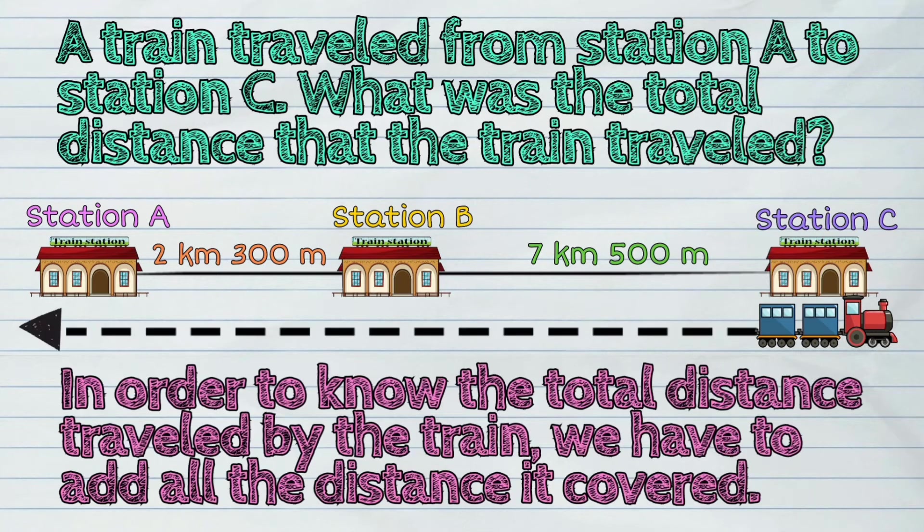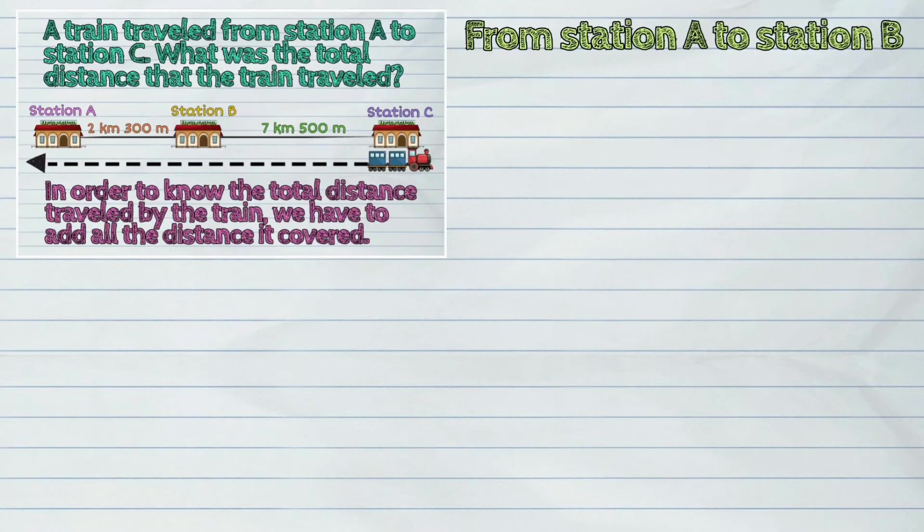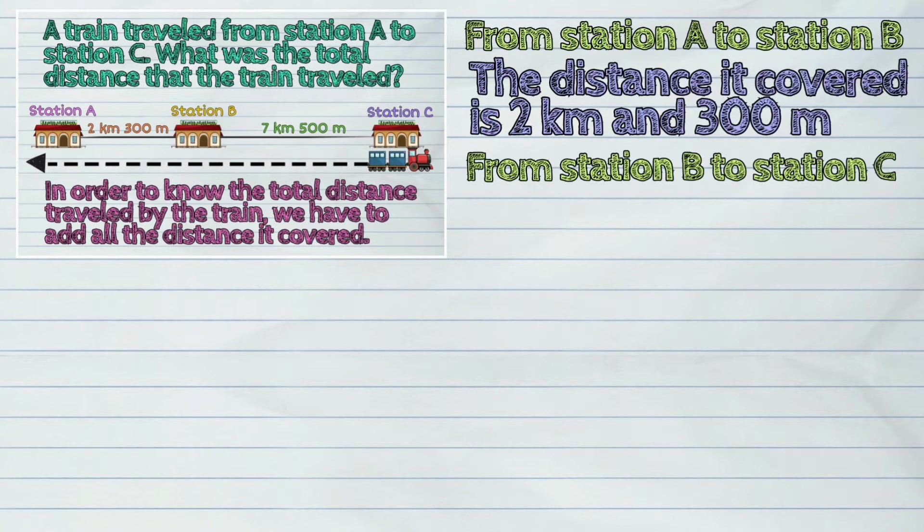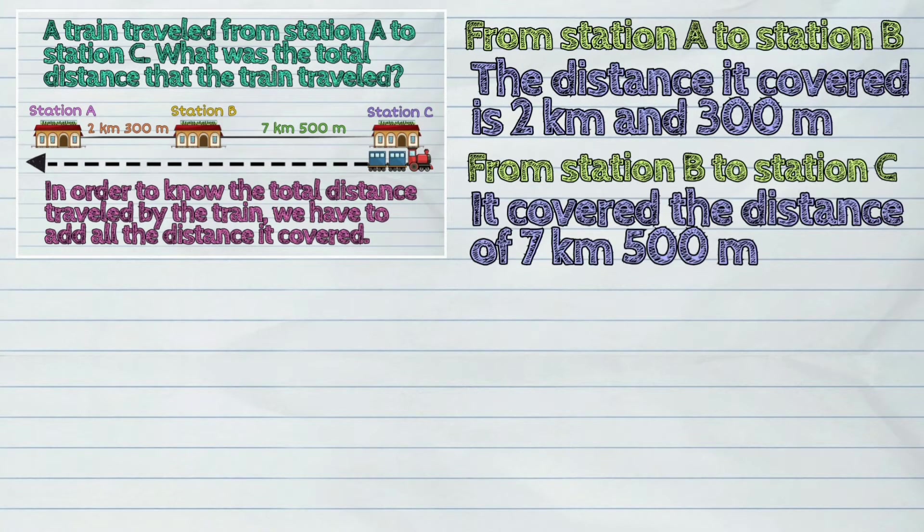In order to know the total distance traveled by the train, we have to add all the distance it covered. From Station A to Station B, the distance it covered is 2 kilometers and 300 meters. And from Station B to Station C, it covered the distance of 7 kilometers and 500 meters. Here is the solution.